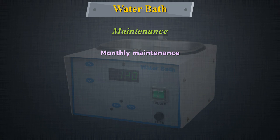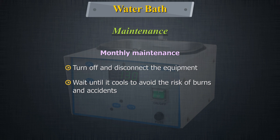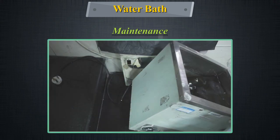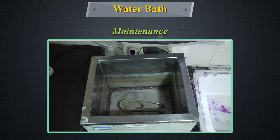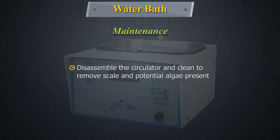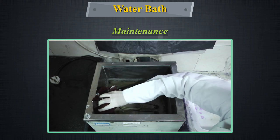Monthly maintenance should include turning off and disconnecting the equipment. Wait until it cools to avoid the risk of burns and accidents. Remove the water used for heating. Remove the thermal diffusion grid located at the bottom of the tank. Disassemble the circulator and clean to remove scale and potential algae present. Clean the interior of the tank with a mild detergent.